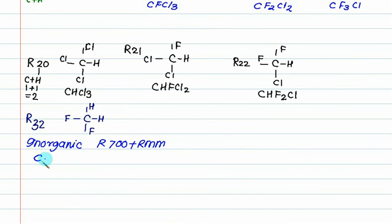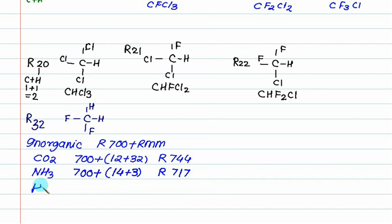CO2 is R744 - carbon mass 12, oxygen 32 equals R744. Ammonia - 700 plus 14 plus 3 equals R717. Water - 700 plus 2 plus 16 equals R718. Sulfur dioxide - 700 plus 32 plus 32 equals R764.